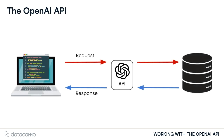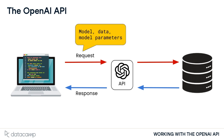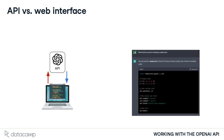We can similarly write code to interact with the OpenAI API and request the use of one of their models. Our request will specify which model we want, the data that we want the model to use, and any other parameters to customize the model's behavior. The response containing the model result is then returned back to us. Some of OpenAI's models, such as ChatGPT, can be used from the web browser.